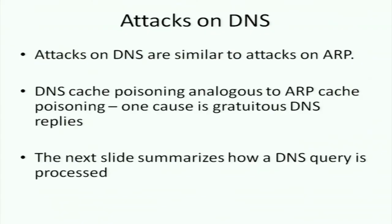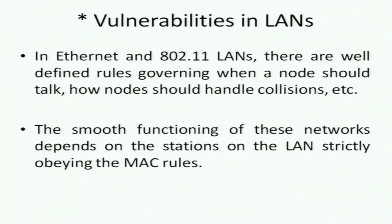Just as you have attacks on ARP, you also have attacks on DNS — because DNS similarly maintains mappings, this time between URLs or domain names and IP addresses. Some of the worst problems can occur with LANs. A LAN's MAC — medium access control — protocol assumes that everybody is going to behave properly. In Ethernet and wireless LANs, there are well-defined rules governing when a node should talk, how nodes should handle collisions, and so on.